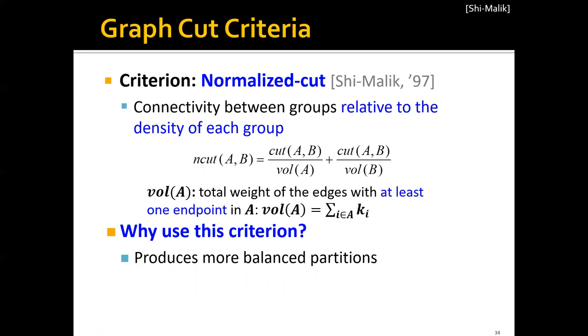Basically, it can be computed as the sum of two terms. The first term would be the original cut of the partitioning over the volume of group A. Note that this cut(A,B) is just the original cut as we defined in the previous slides.